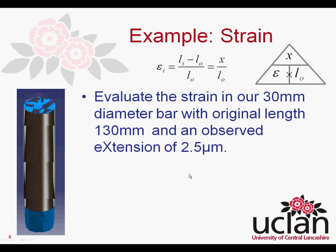So that's the end of this first segment. Before we go, I'd like you to have a look at the example strain calculation: evaluate the strain in our 30 millimeter diameter bar if we're given an original length of 30 millimeters and we observe an extension — that's why we use the X in our little formula — of 2.5 micrometers. If you could do that calculation and then come back, we'll solve it for you in the next segment.